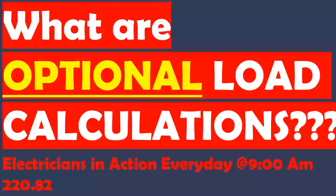It starts in 220.80, which gives you the general overview of that section. Then it gets into part A and part B, and that is when we're dealing with 220.82. That's where the whole thing starts and it continues on into different scenarios, even for commercial occupancies and different things.